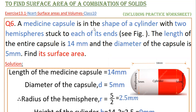A medicine capsule is in the shape of a cylinder with two hemispheres stuck to each of its ends. The length of the entire capsule is 14 mm and the diameter of the capsule is 5 mm. Find its surface area.